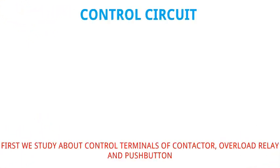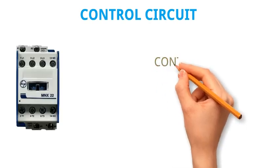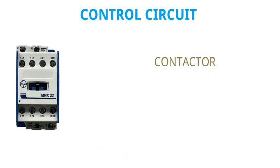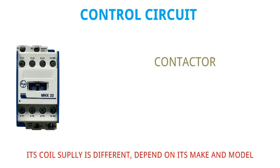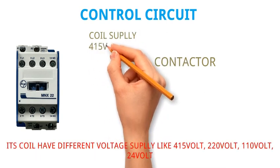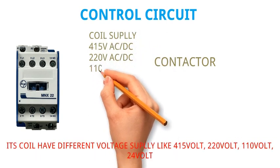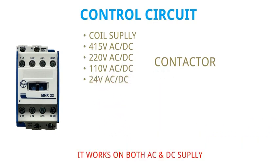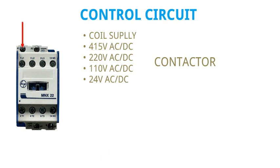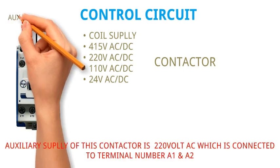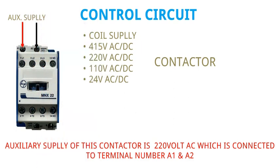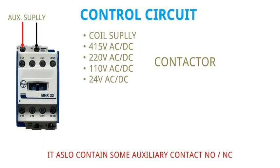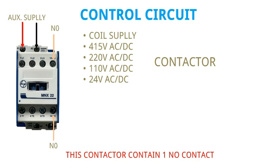First we study the control terminals of the contactor, overload relay, and push button. The contactor coil supply varies depending on its make and model — it can be 415 volt, 220 volt, 110 volt, or 24 volt, and it works on both AC and DC supply. The auxiliary supply of this contactor is 220 volt AC, connected to terminals A1 and A2. It also contains auxiliary contacts — NO and NC. This contactor contains one NO contact.